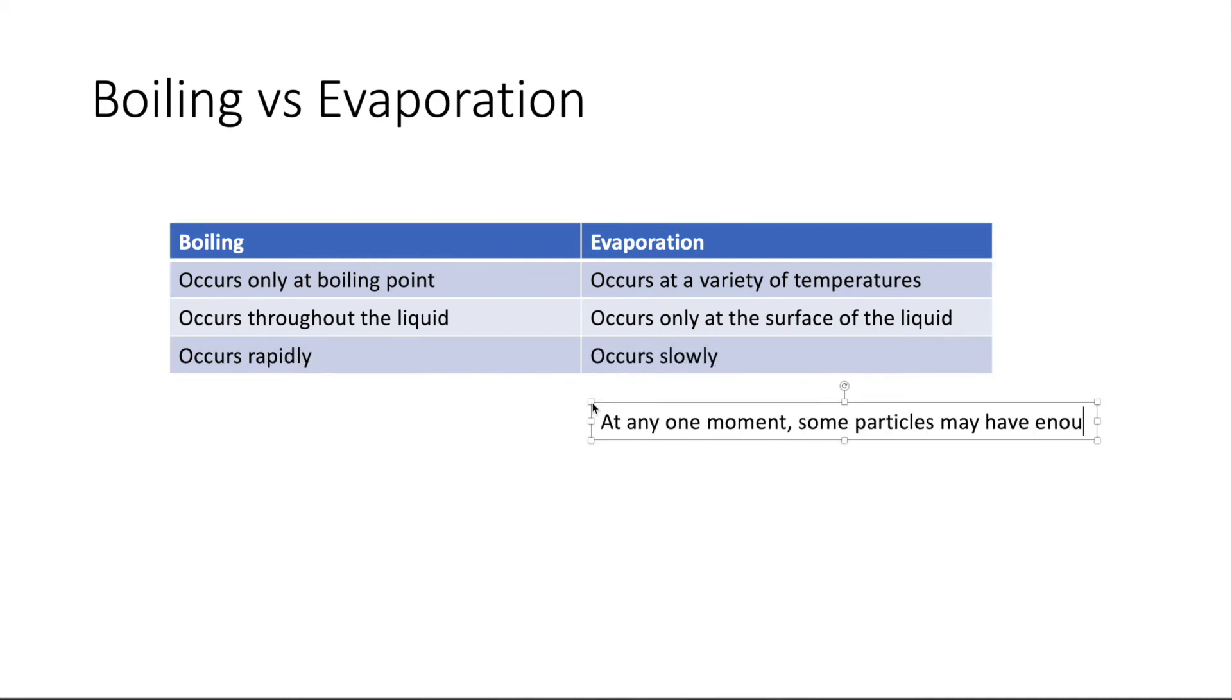However, for evaporation, it could occur in a wide variety of temperatures. It only occurs at the surface and it occurs slowly. At any one point in time for evaporation, some particles will just have enough energy to escape as a gas, to break away from the forces of attraction that's holding them down into the liquid. That's how it happens.